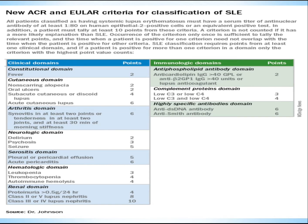There is a criteria that is used, and before you even get to the criteria, there's something that needs to be positive first. All patients classified as having SLE must have a serum titer of anti-nuclear antibody (ANA) of at least 1:80 on human epithelial-2 (HEp-2) positive cells, or an equivalent positive test.